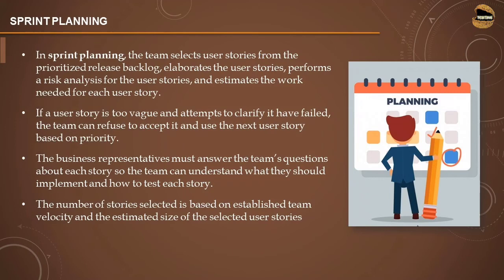The business representatives must answer the team's questions about each user story so the team can understand what to implement and how to test each story. The collaboration of business representatives helps the team understand what should be done and how to meet the expected requirements. The number of user stories selected is based on established team velocity and estimated size of the selected user story — not more and not less — to maintain velocity you select according to your pace.